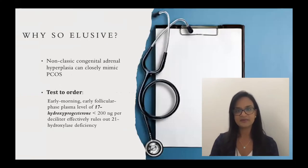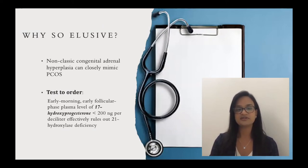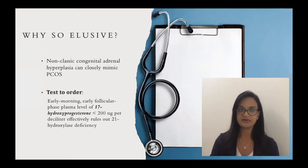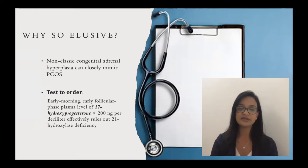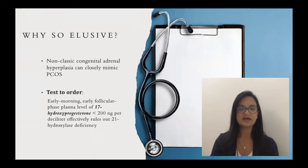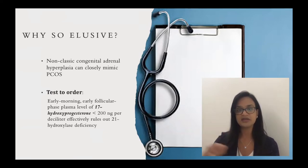There is another condition called non-classical congenital adrenal dysplasia that can closely mimic PCOS. The test we order to rule this out is an early morning, early follicular phase plasma level of 17-hydroxyprogesterone. When it's less than 200 nanograms per deciliter, it effectively rules out 21-hydroxylase deficiency and should be a part of our checklist when working up PCOS.